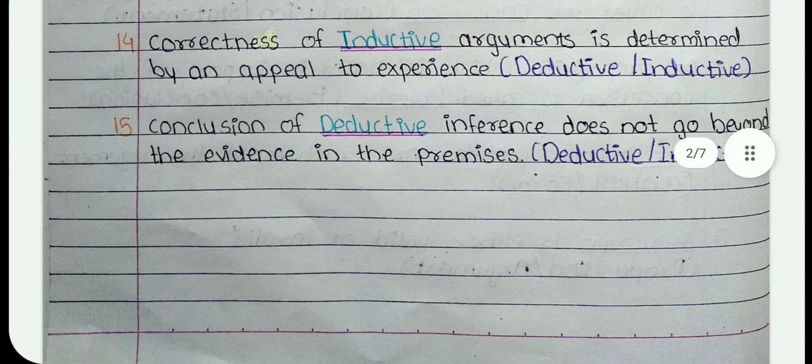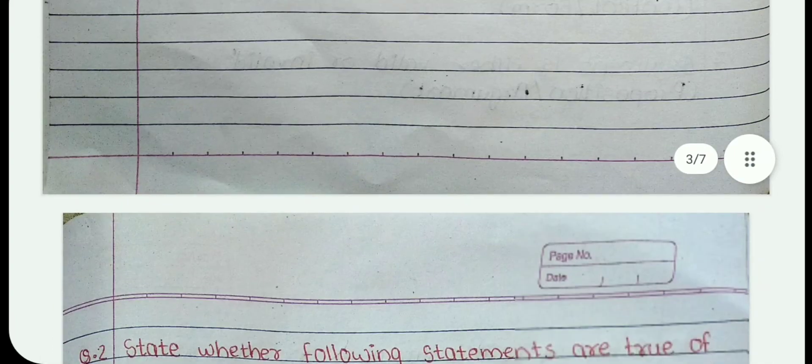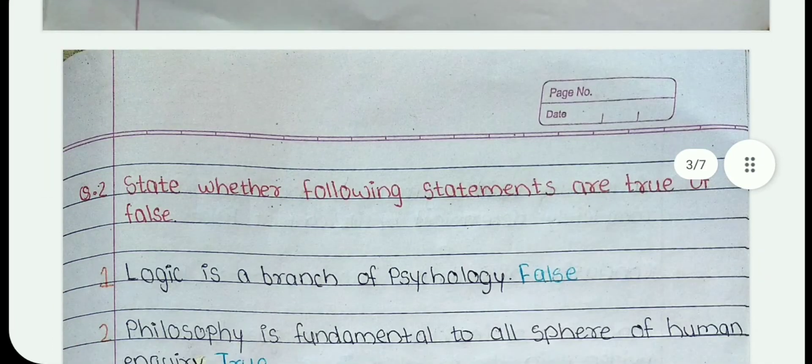15. Conclusion of Dash inference does not go beyond the evidence in the premises. The answer is Deductive. Question 2.